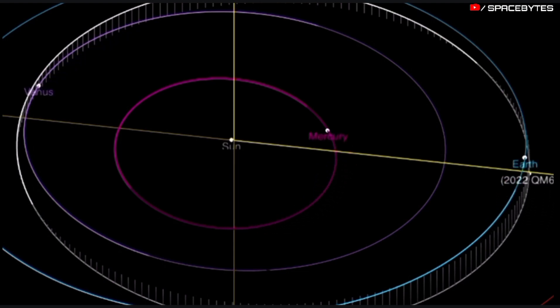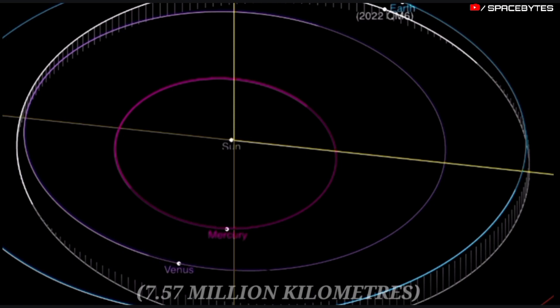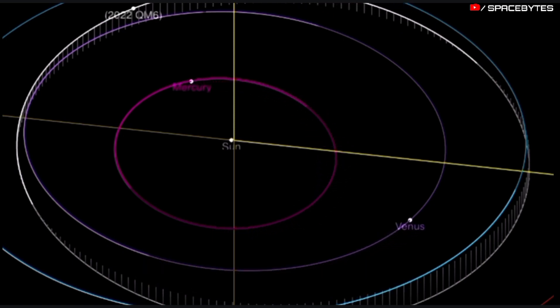The distance of Asteroid 2022 QM-6 from Earth is currently 7.57 million kilometers, equivalent to 0.05 astronomical units.